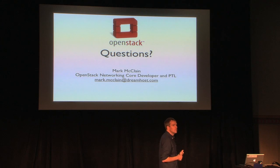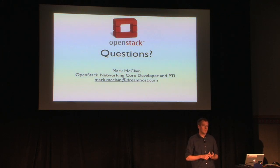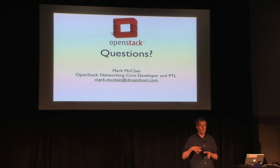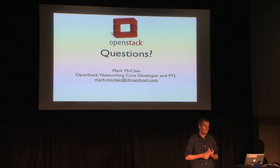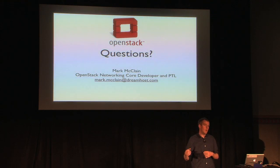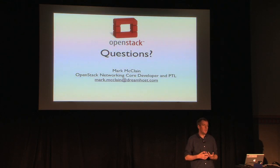Question: For those services mentioned for future release, is the goal just an API or a full implementation? The goal with the services is two-pronged: we need an API that works and the community understands, but we also need a reference implementation using open source software that the community can use to test the API and discover how the service works. It also provides a test bed for vendors to make sure their implementations are compliant with the API. This applies to load balancing, firewall, and VPNs — there needs to be an open source story for each. Similar to the core plugins, we have the Linux Bridge plugin and the OVS plugin so there's always an open source implementation to test and try.